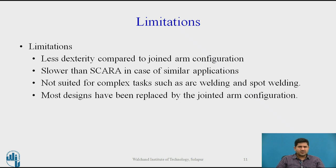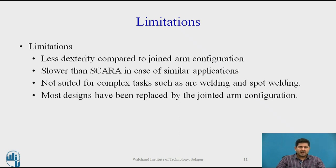Obviously every configuration comes with certain limitations. One limitation is that it's not as versatile as the jointed arm configuration, and it's not suited for reaching difficult places. Orientation is nothing comparable to the jointed arm configuration, which can be used if a part has to be located in the most difficult of places — so it's less dextrous. For assembly operations especially from the top, SCARA is any day better and way faster compared to Cartesian configuration. Spot welding and arc welding, which require complex orientation, are not really suited for Cartesian, and that's why the jointed arm configuration is now popular for welding tasks.